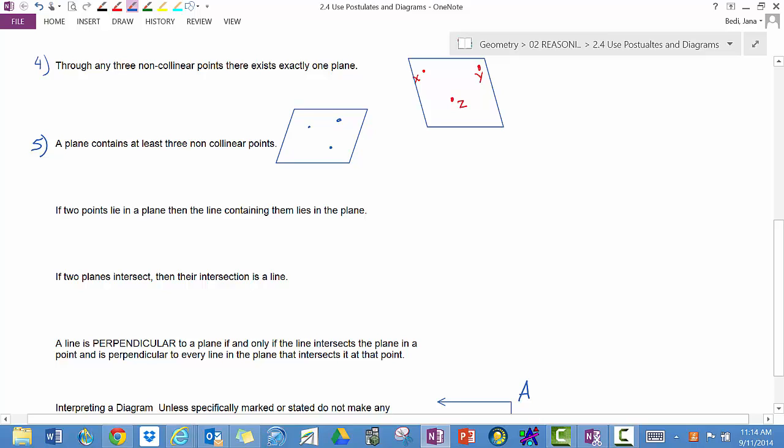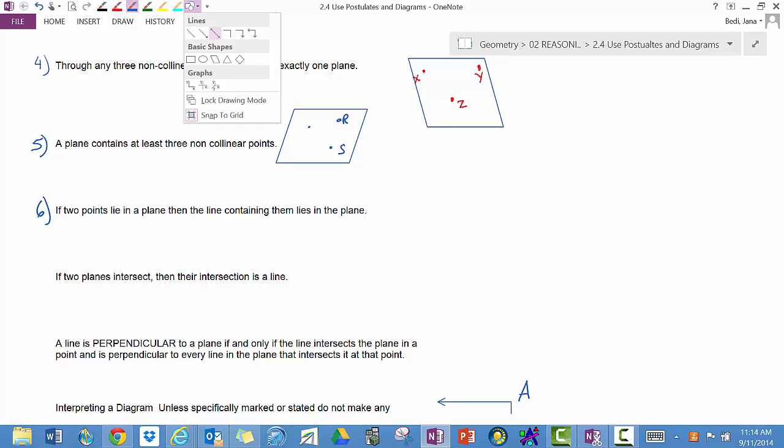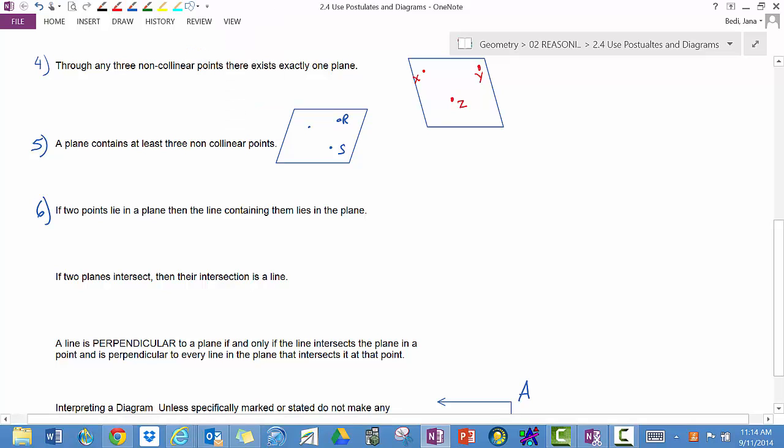This is obvious. The next one, that if two points lie in a plane, so let's look at the diagram above. Let's call these points R and S. If the two points lie in a plane, then the line containing them also lies in the same plane. So there we go.